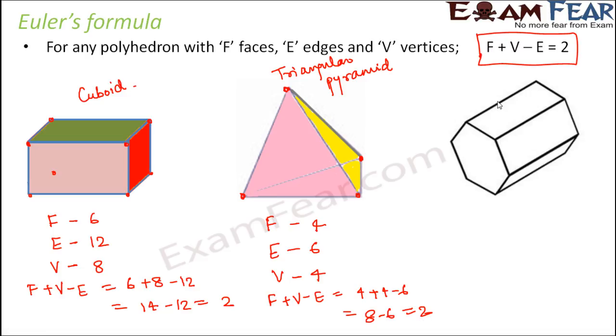What is this? This is a hexagonal prism. So what do you think? Will the relation hold true for hexagonal prism also? It should because hexagonal prism is a polyhedron. How many faces do we have? So 2 hexagonal faces plus 6 side faces. That means total 8 faces.